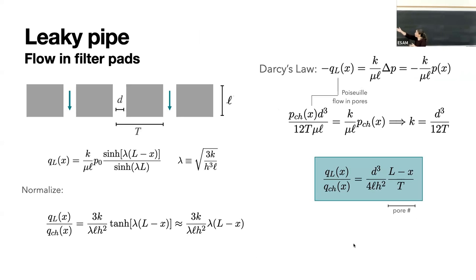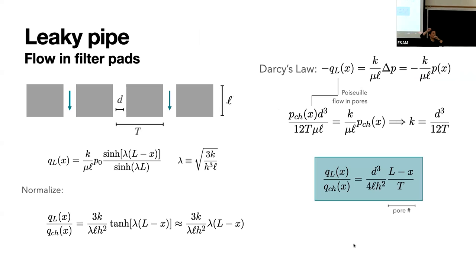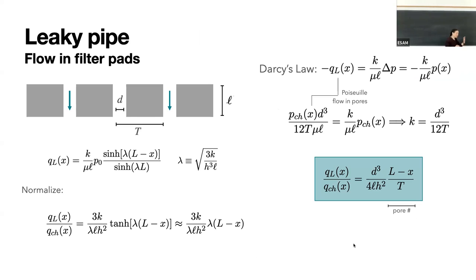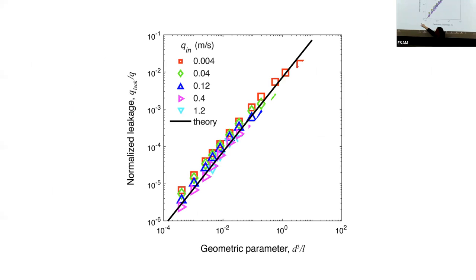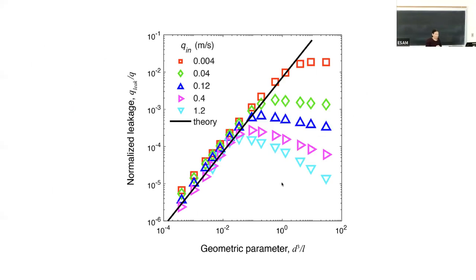I'm going to go back to Xinyu's simulations - he has all of those ANSYS simulation points from before, all those little blue and red stars. We can measure Q_leak for all of those points and check to see if this relationship is really true - does Q_leak over Q_channel scale like D-cubed over L? It's amazing - it does. There are no fitting parameters in this. This is my normalized Q leakage versus D-cubed over L, and it's exactly what we predicted. It works beautifully - until it does not work at all.